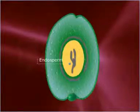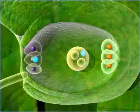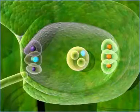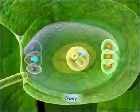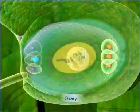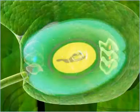After the double fertilization, the ovary starts to swell and develops into a fruit with seeds.